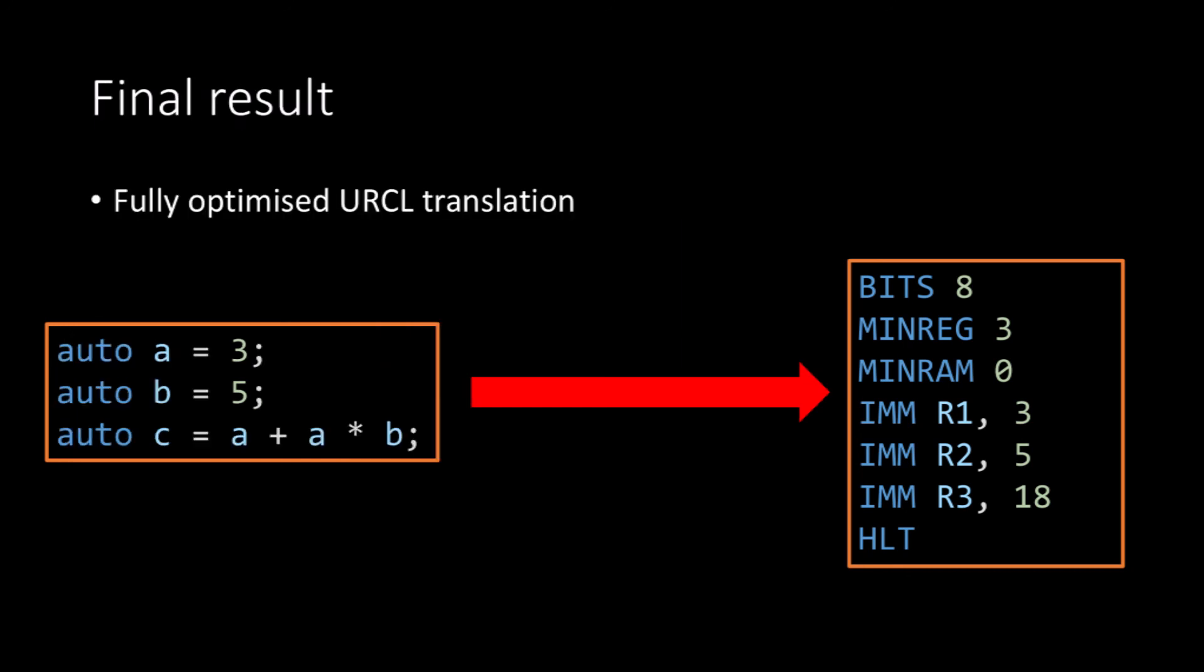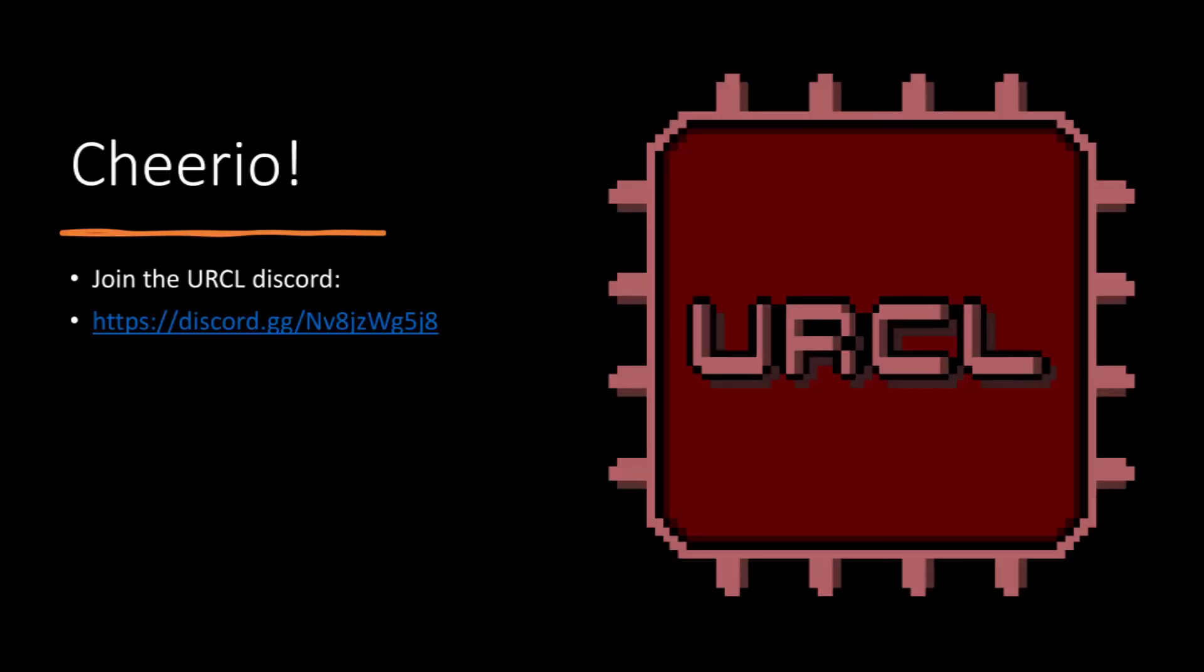What this means is that we've taken our B code, our initial B code on the left, and we have converted it to the URCL code on the right. This is the fully optimized URCL translation of this code. That's everything I wanted to say in this video. Do feel free to join the URCL discord, the link is on the screen and also in the description. And with that, cheerio!